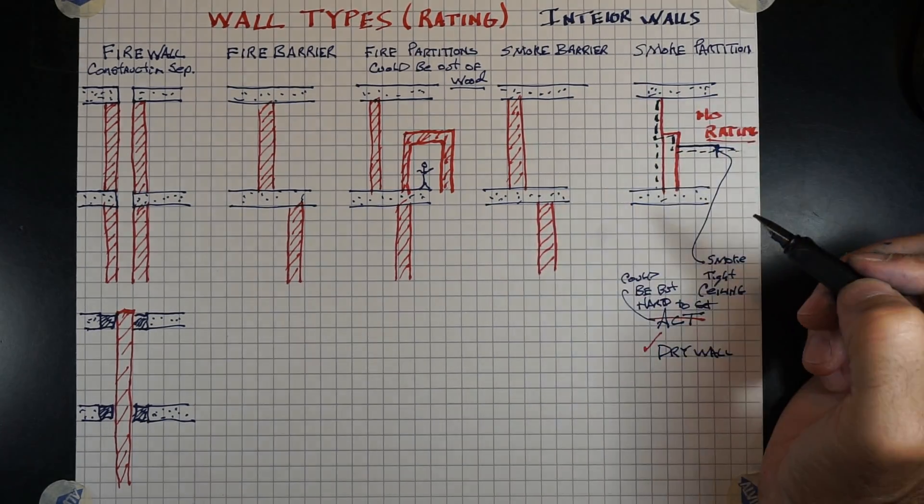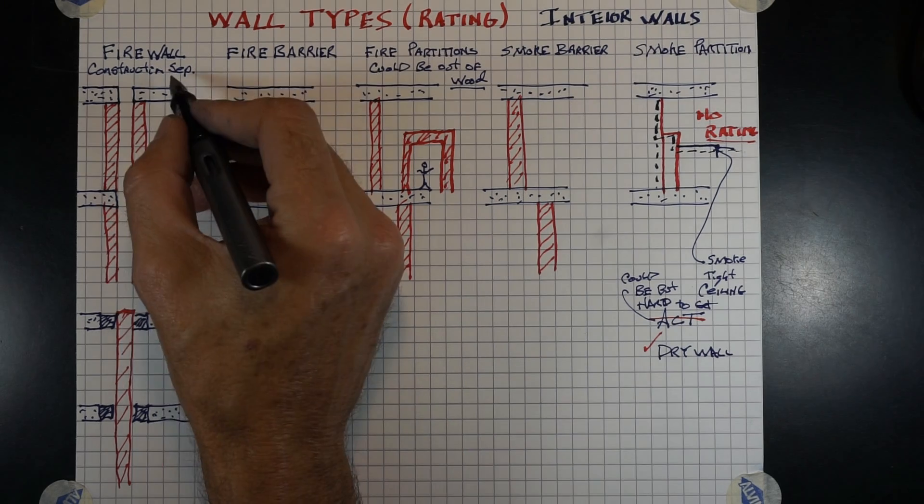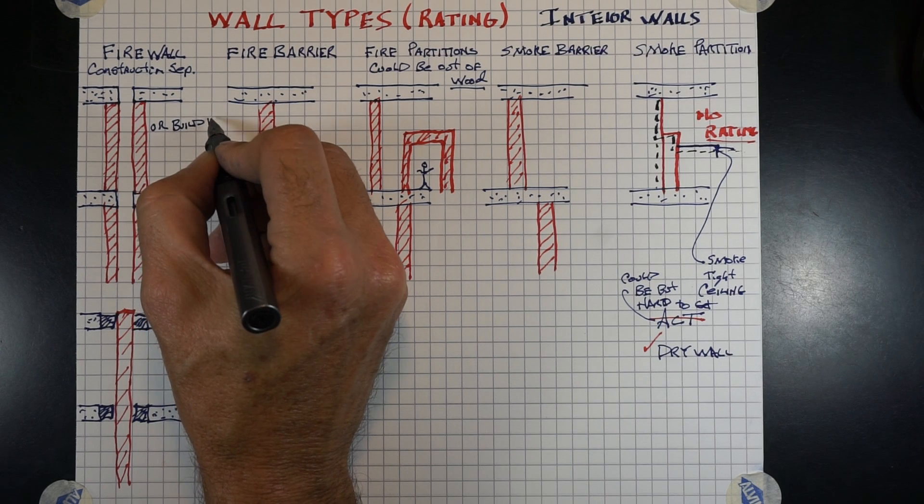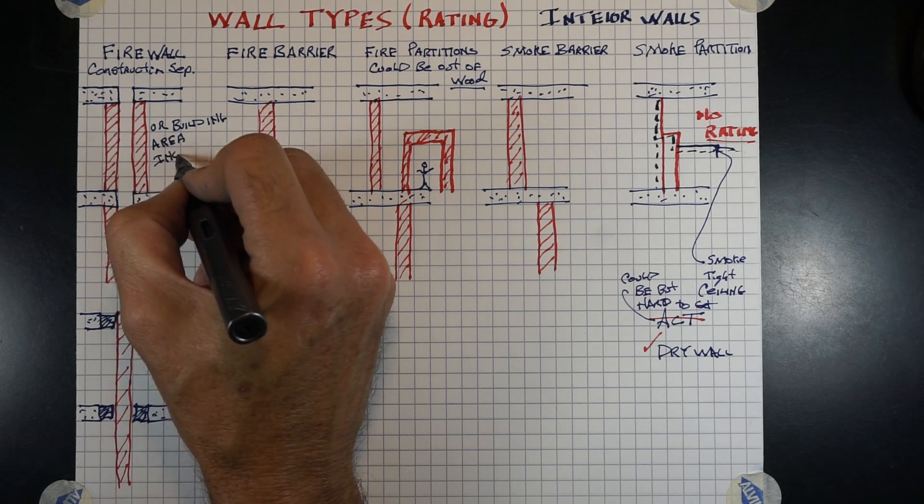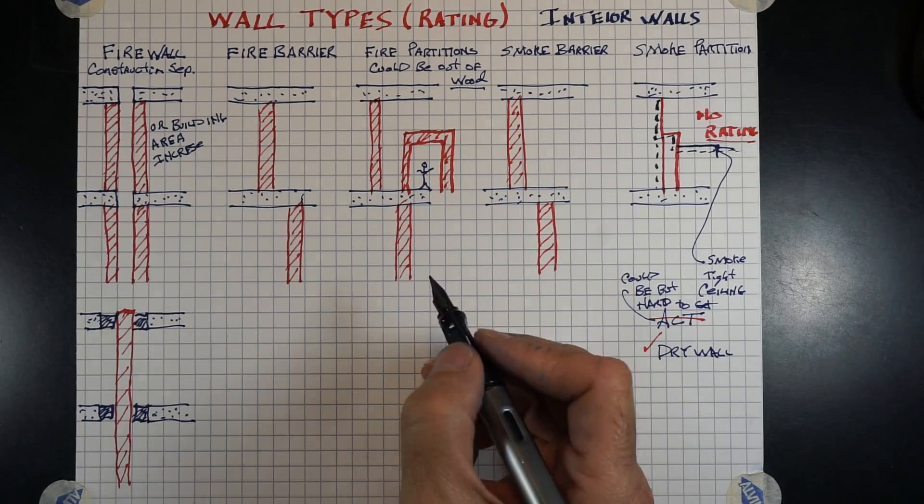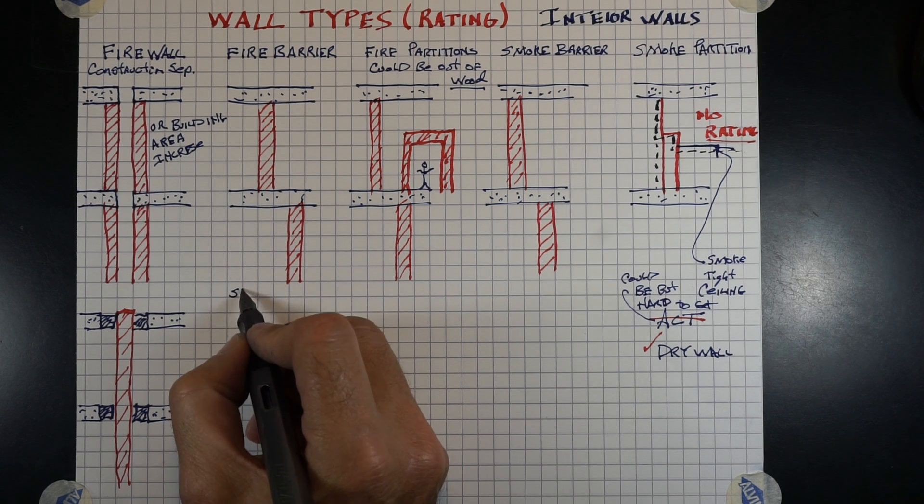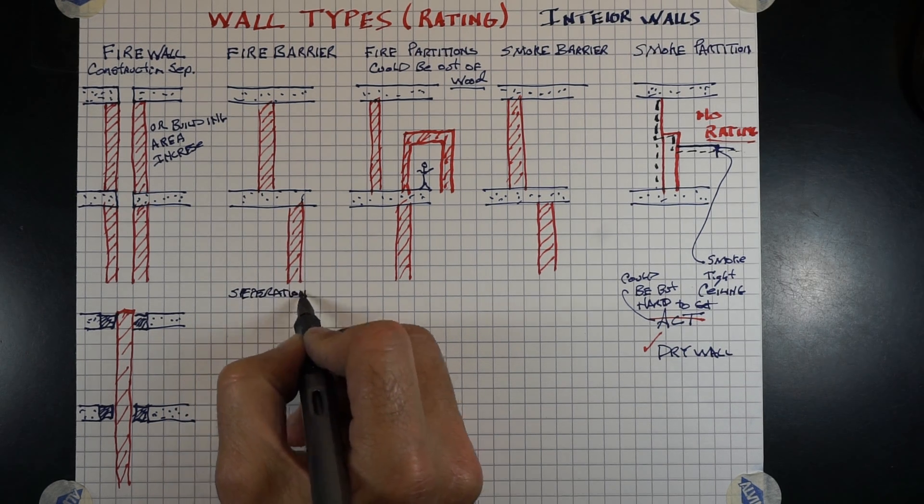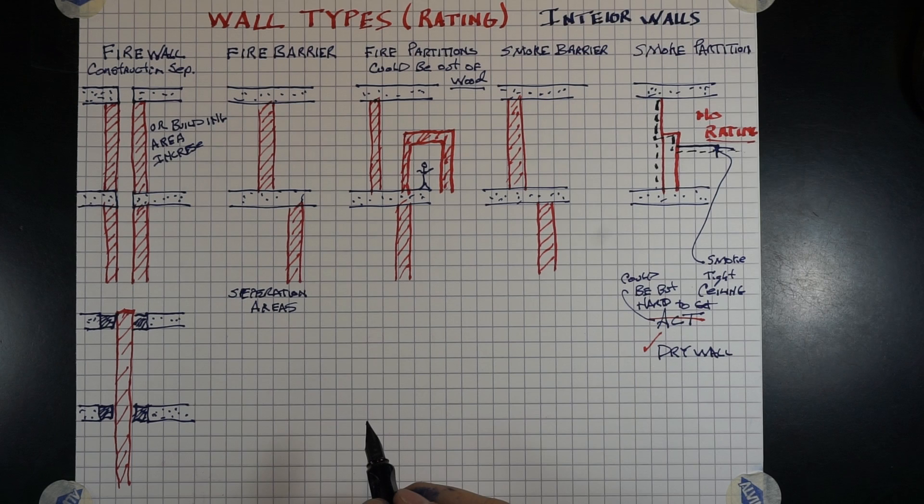So, let's refresh. A firewall is the most stringent type of firewall out there, and typically it separates construction type or allows you to increase your building area because it is considered a total separate building when used appropriately. A fire barrier is used to separate occupancies and or other small areas such as a storage room or other items within a non-combustible type building.